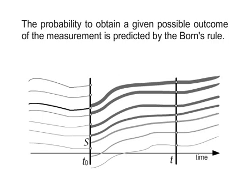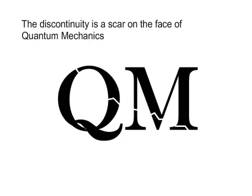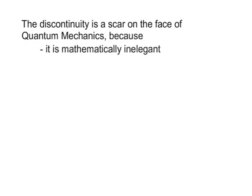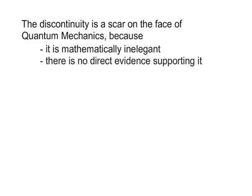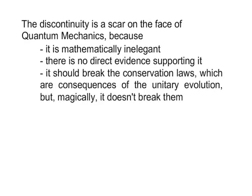The probability to obtain a given possible outcome of the measurement is predicted by Born's rule. The discontinuity is a scar on the face of quantum mechanics: it is mathematically inelegant, there is no direct evidence supporting it, and it should break the conservation laws — which are consequences of the unitary evolution — but magically it doesn't break them.